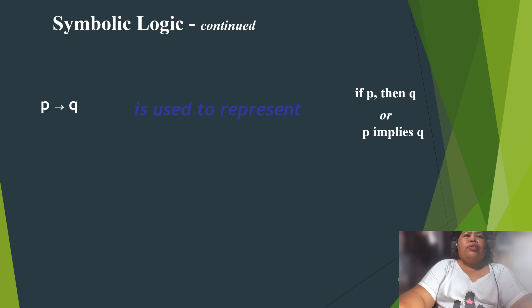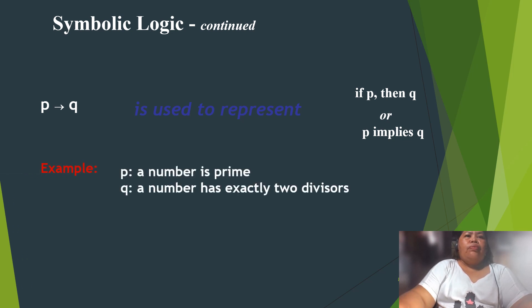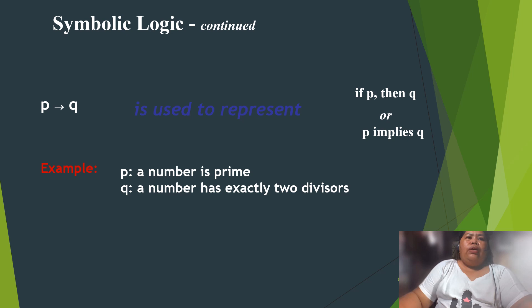The symbol '→' is used to represent 'if P, then Q,' or 'P implies Q.' Example: P is the hypothesis — 'a number is prime'; Q is the conclusion — 'a number has exactly two divisors.'